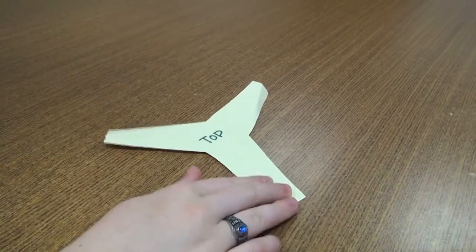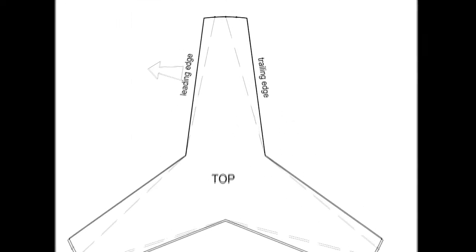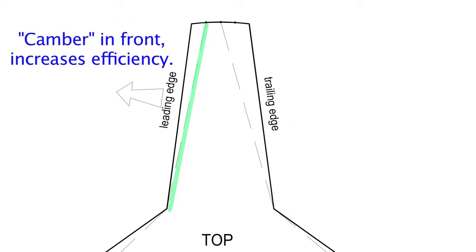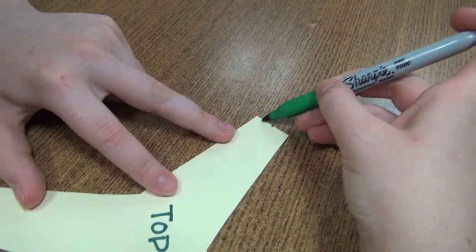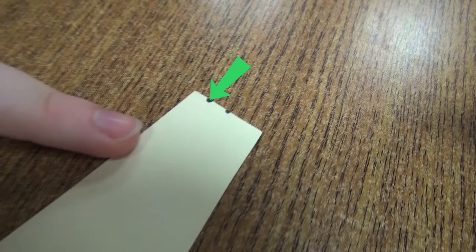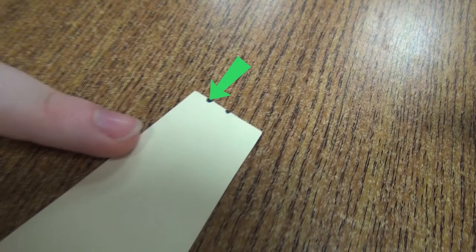So flatten it out a bit. Bending a narrower segment on the front, called camber, also reduces drag and increases flight efficiency. It goes from the root to a point between the front edge and the first mark.